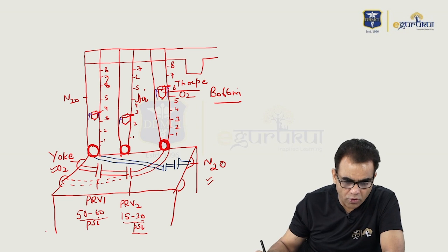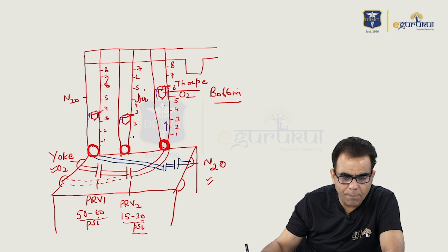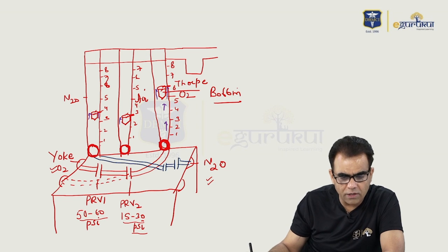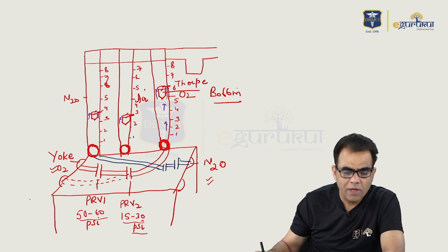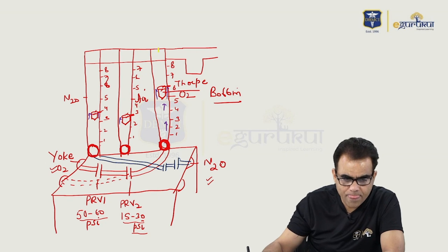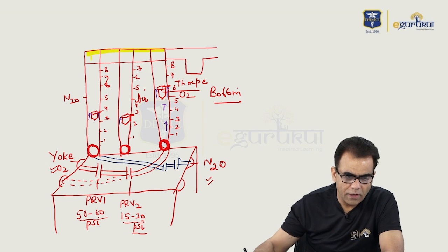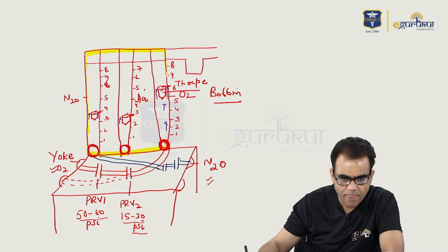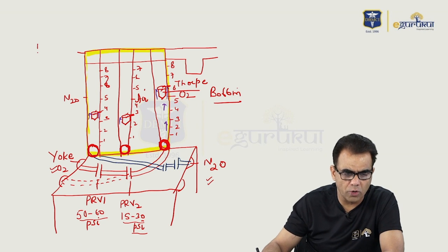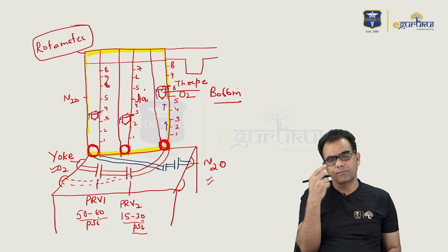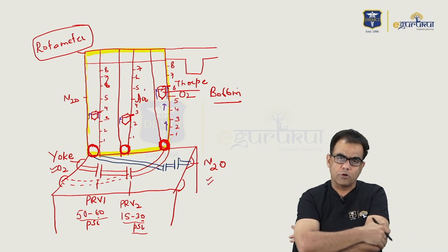If you want to increase the flow, you rotate the knob, more gas will come, and the bobbin will go up. If you want to reduce the flow, rotate the knob the other way and the bobbin will come down — that is how you determine the flow rate. This whole unit containing different flow meter tubes and flow control knobs is called the rotameter. It is called rotameter because it has a rotating bobbin in it.